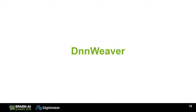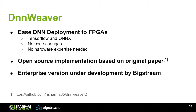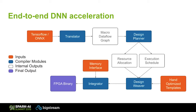DNN Weaver is a tool designed to ease the deployment of deep neural networks to FPGAs. It supports TensorFlow and ONNX currently, and with no code changes and without hardware expertise, you can compile your deep neural network into a bit file which can be uploaded to an FPGA. This is based on research work — there are papers published on it and an open source implementation available. At BigStream, we're excited to be working on an enterprise implementation with improved performance and additional features that we'll be making announcements about soon.